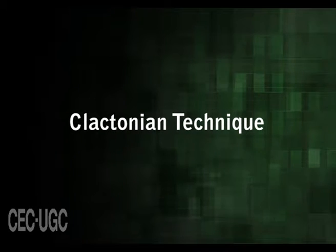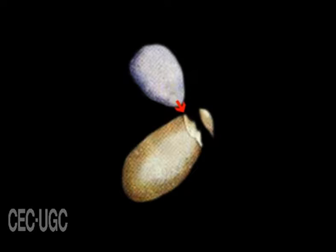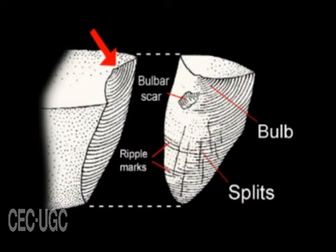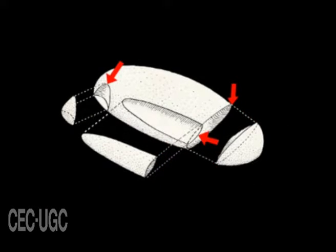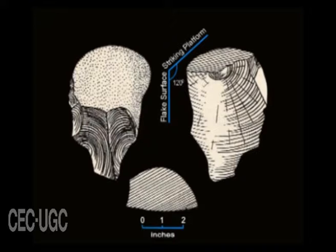The Clactonian technique is a technique of detaching a large flake for making flake tools. Clactonian flakes could also be obtained by using the anvil or stone hammer technique. In this case, a naturally flattened surface is used as the striking platform. Such flakes have a prominent bulb of percussion on the main flake surface near the striking platform, and the angle between the main flake surface and the striking platform is always greater than 90 degrees, roughly 120 degrees.